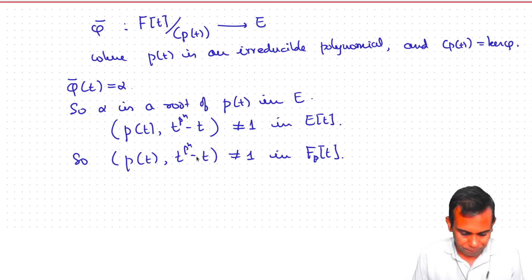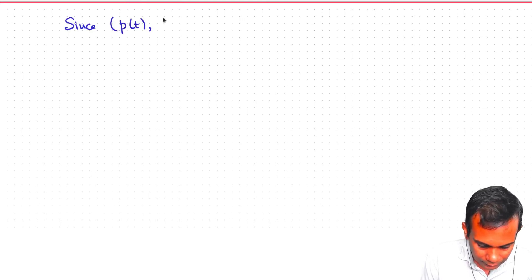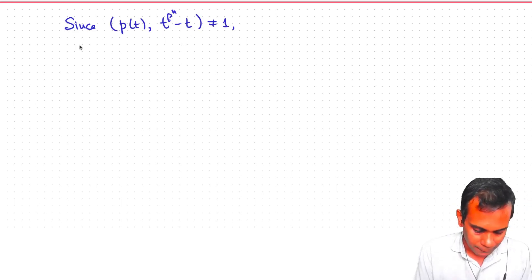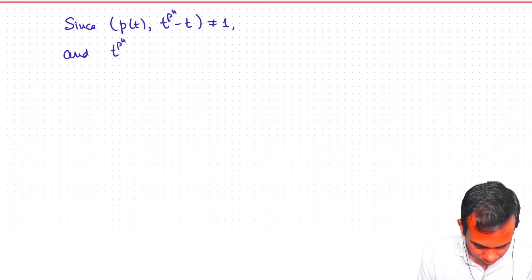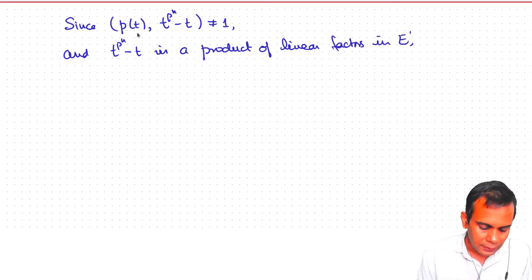Now, let us move to the field E prime. So since Pt and T to the p to the n minus T is not equal to 1 and T to the p to the n minus T Pt splits into linear factors in E prime, is a product of linear factors. This means that Pt has a root in E prime.